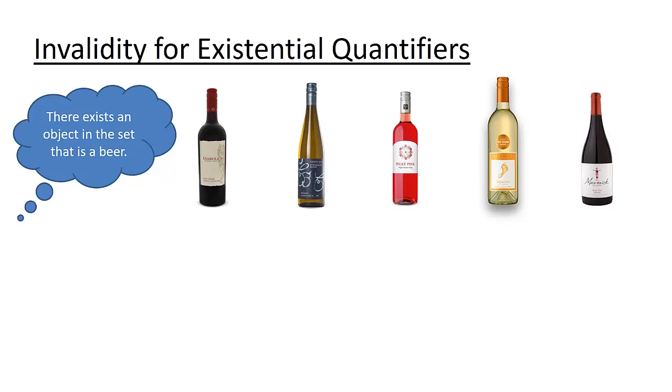You could imagine though that if we had a really big set of objects, it would be really challenging to check every single one of those objects. So what does this tell us? Well, we really can't find counterexamples for statements involving existential quantifiers. Instead, if we'd like to prove those statements false, we must look at every single object in the set and show that each object doesn't have the property in question. This can sometimes take a lot of work.